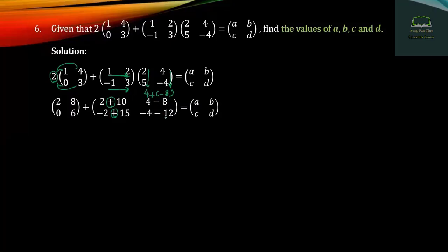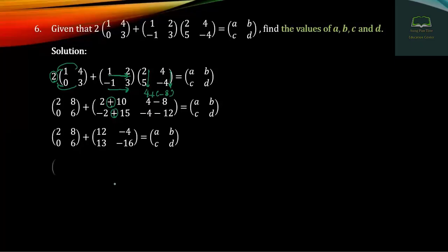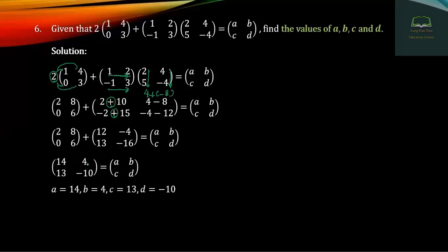The first row is 1 into minus 2. 13 minus 16 divided by the data — the matrix corresponding entries, minus 10 equality of material ready.